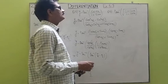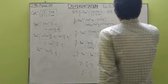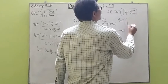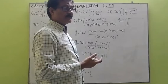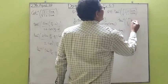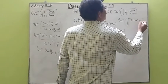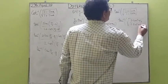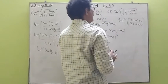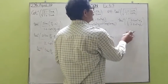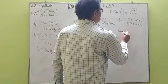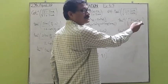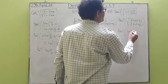Moving on to the next question. We have tan inverse of root((1 plus cos x)/(1 minus cos x)). We know directly that 1 plus cos x equals 2 cos squared(x/2), and 1 minus cos x equals 2 sin squared(x/2). When we simplify this function, the square root removes the squares, cos(x/2) over sin(x/2) cancels to give cot(x/2).